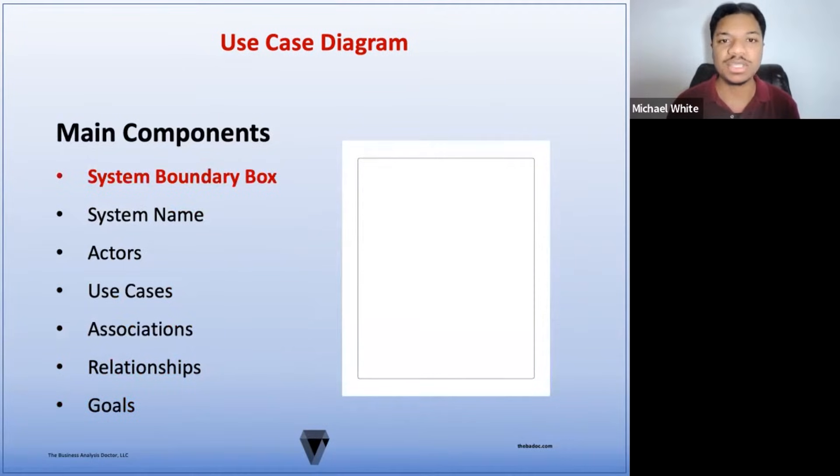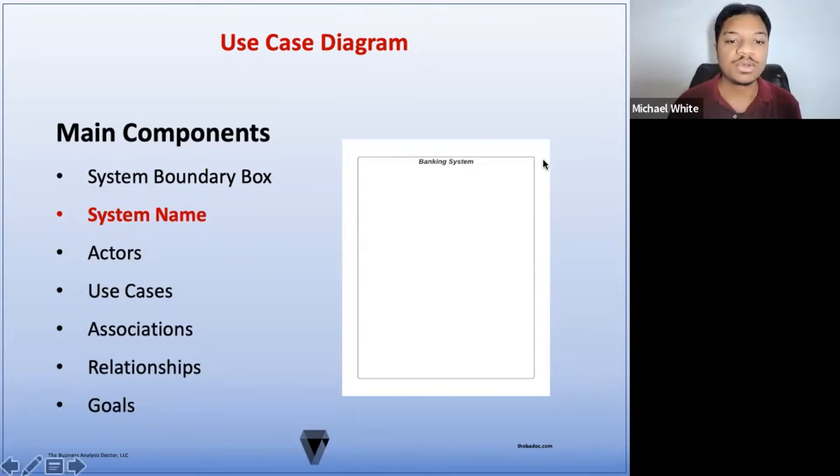Now, let's look at each of these in more detail. The system boundary box represents the boundary of a system or solution. It's presented as a large rectangular box surrounding the use case. Any use case inside of the rectangle is considered to be within scope, and any use case outside of that rectangle is considered to be out of scope. Then we have the system name. The system name represents the name of the system or solution being defined. It's located at the top center of the system boundary box.